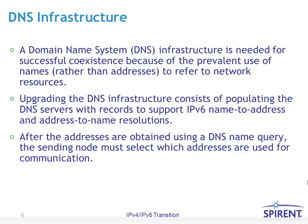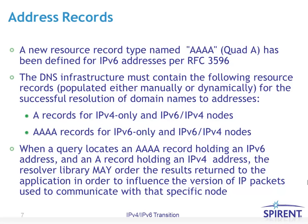After addresses are obtained using DNS, the sending node must select which address to use for communication. You could send a DNS request for a specific name and receive back both an IPv4 and an IPv6 address — or possibly even many flavors of IPv6 addresses, given scoped addresses where you might have multiple IPv6 unique addresses to select from. A new resource record type named Quad-A has been defined for IPv6 addresses in RFC 3596. The DNS infrastructure must contain A records for IPv4 addresses and Quad-A records for IPv6 addresses.